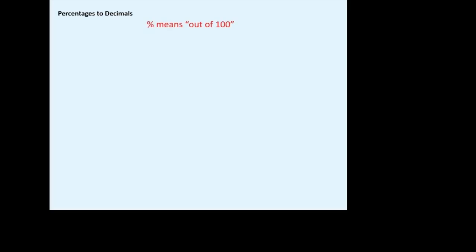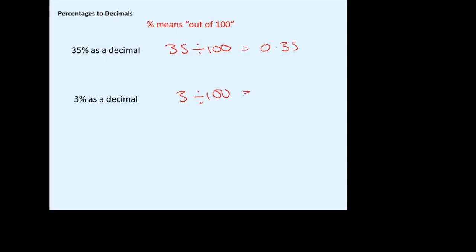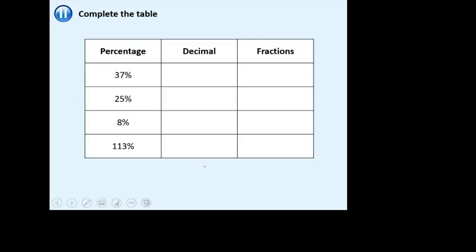Changing percentages to decimals: again, percentage means out of 100. All you have to do is divide by 100. So 35% ÷ 100 = 0.35. Take your percentage, divide it by 100. 3 ÷ 100 = 0.03. And 120 ÷ 100 = 1.2. Notice I haven't put a zero on the end — there's no need, it's just 1.2. Here are a few questions — fill out the table. For the first one, you'd write 0.37. Make sure you simplify for the fractions.